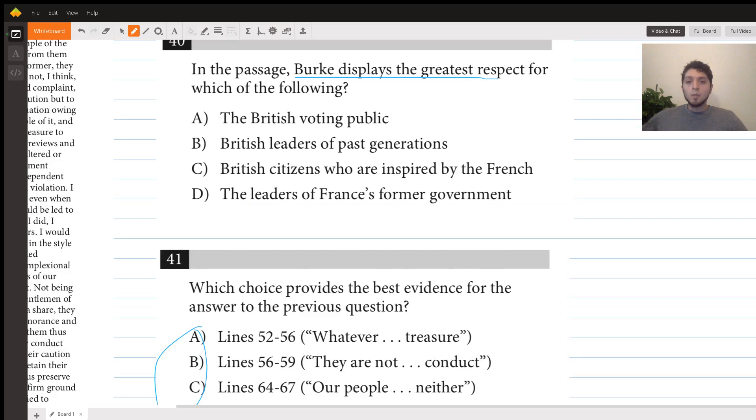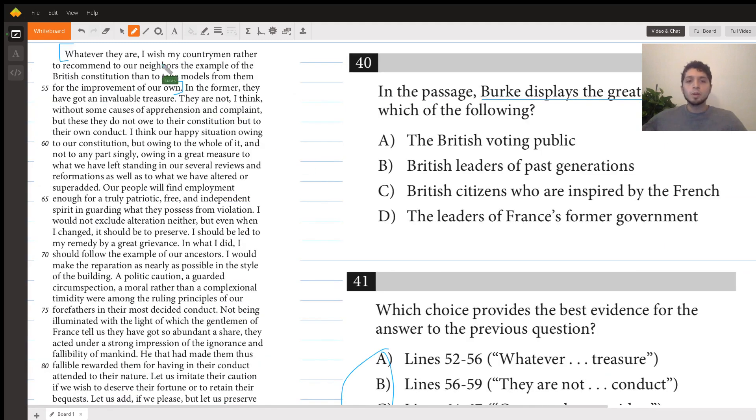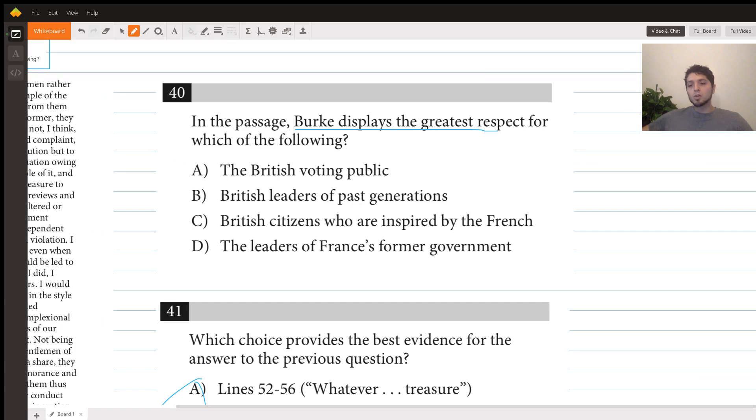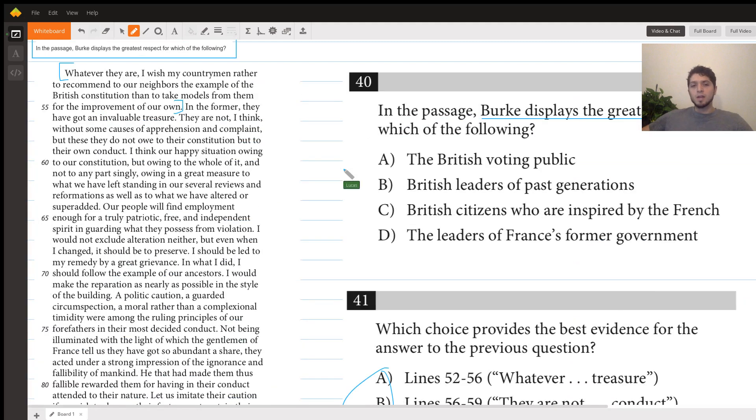What this doesn't do is tell us anything that Burke displays the greatest respect for. Maybe it could be for the constitution, implicitly, but it's not really direct. Also, we can scan and see that he's giving credit to people: leaders, citizens, voting public. So not to a thing, so I don't think this is a good answer choice.